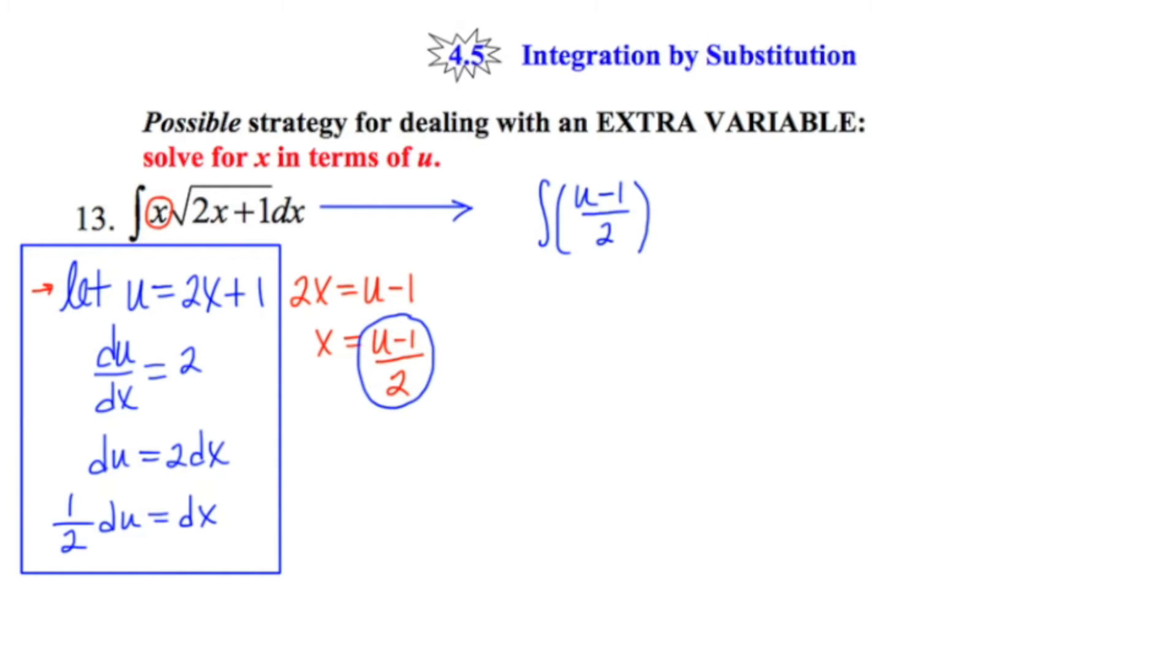So my first maneuver is going to be to substitute this new expression for x into our integrand. And now I'll rewrite the square root of 2x plus 1 as root u, or u to the 1 half. And this dx that occurs at the end is the same as this dx here at the bottom of the box, which is 1 half du. And I'll put that 1 half out in front.